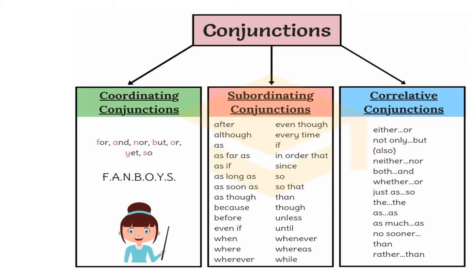For subordinating conjunction, you need an independent clause and a dependent clause, because it works with clauses. For correlative conjunction, when you have two ideas — for example, 'either...or' or 'neither...nor' — you use correlative conjunction when you want to correlate two ideas in one sentence. We will look at each of these conjunctions in detail.